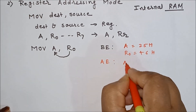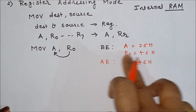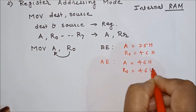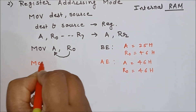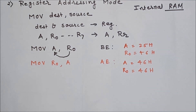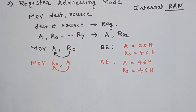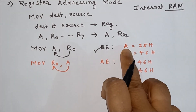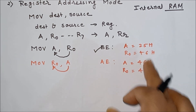For example, before execution suppose accumulator contains 25H and register R0 contains 46H. After execution of MOV A, R0, the accumulator will contain 46H because the data of R0 is stored in accumulator, and the data of R0 remains as it is at 46H. You can also use R0 as destination and accumulator as source — in that case, accumulator contents will be stored in R0.